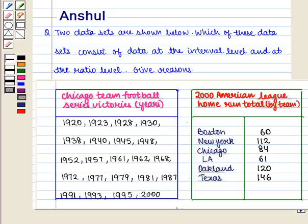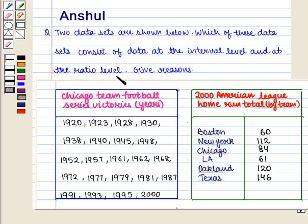Hello and welcome to the session. In this session we are going to discuss the following question: Two data sets are shown below. Which of these data sets consist of data at the interval level and at the ratio level? Give reasons.